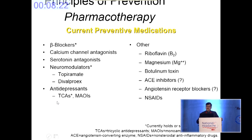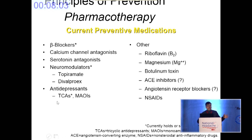The drugs in our armamentarium are beta blockers, calcium channel antagonists, serotonin antagonists, neuromodulators or anti-epileptic drugs like topiramate and sodium valproate, tricyclic antidepressants, monoamine oxidase inhibitors, riboflavin, magnesium, botulinum toxin, ACE inhibitors, and non-steroidal anti-inflammatory drugs as prophylaxis. I will touch the salient points of each one by one.